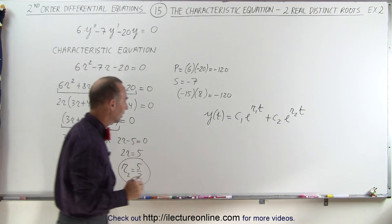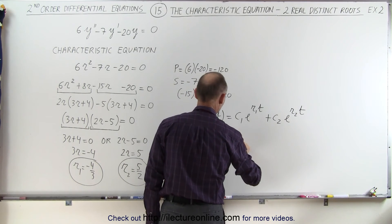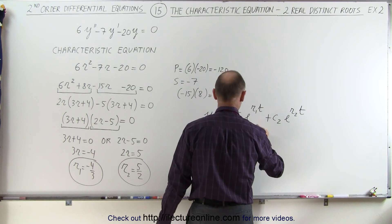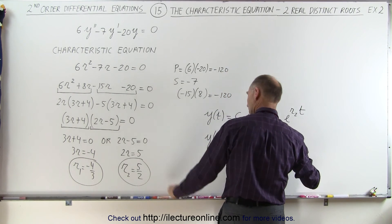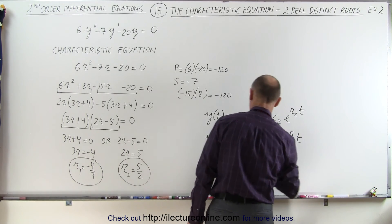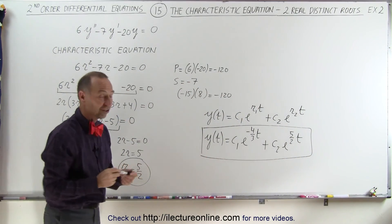Since we know what they are, the general solution is y(t) = c1·e^(-4/3·t) + c2·e^(5/2·t). This is the general solution to our differential equation.